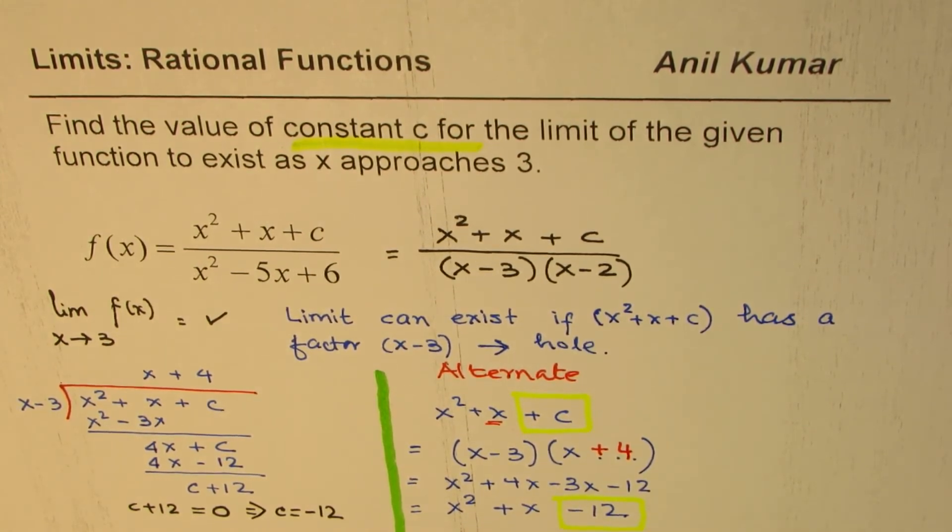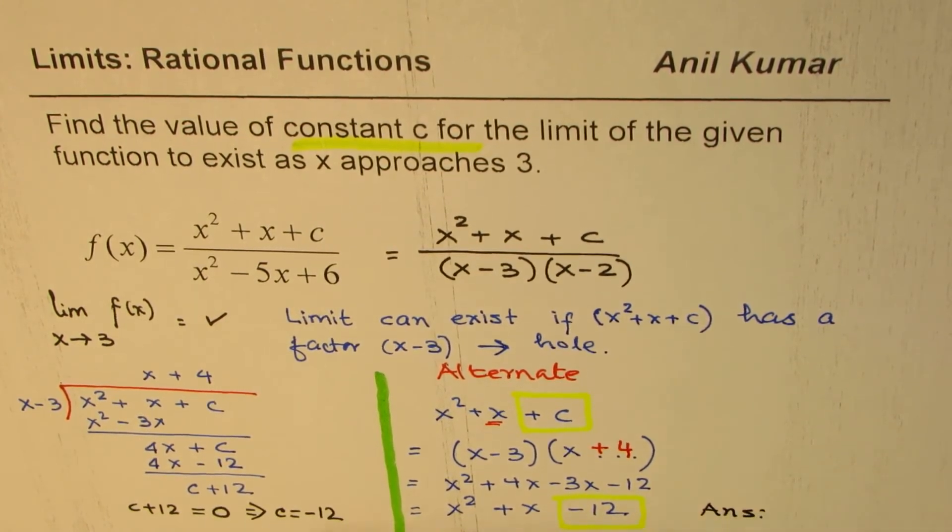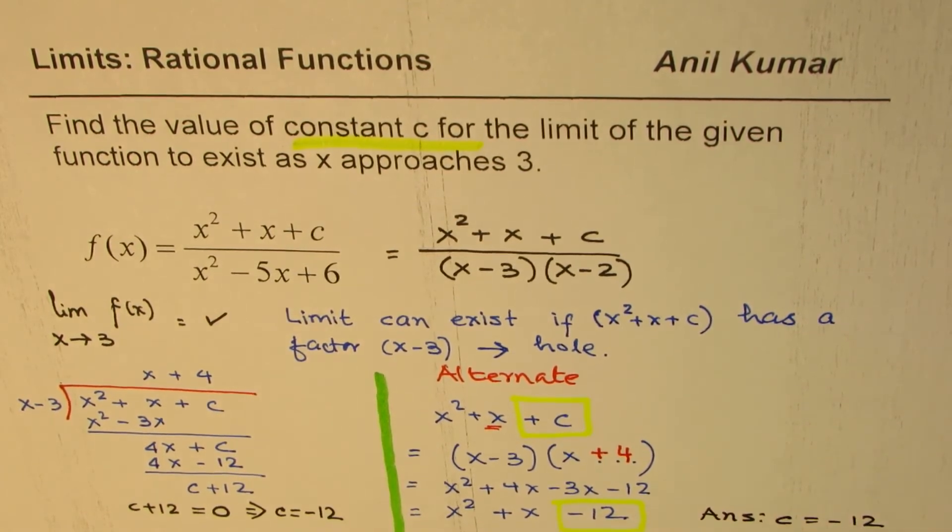you can see that the value of the c should be minus 12. Do you get the answer? So likewise, we can adopt any method, any of these. And we can say c is equals to minus 12. I hope you understand and appreciate the approach which I've taken here. Let's go through it once again.